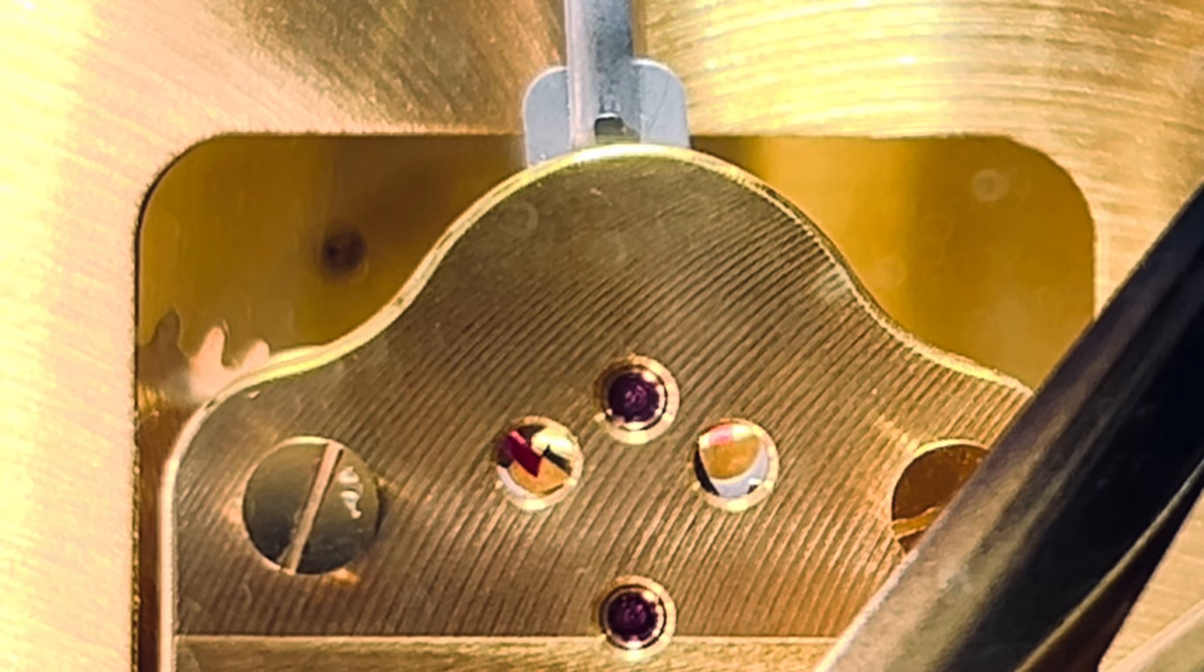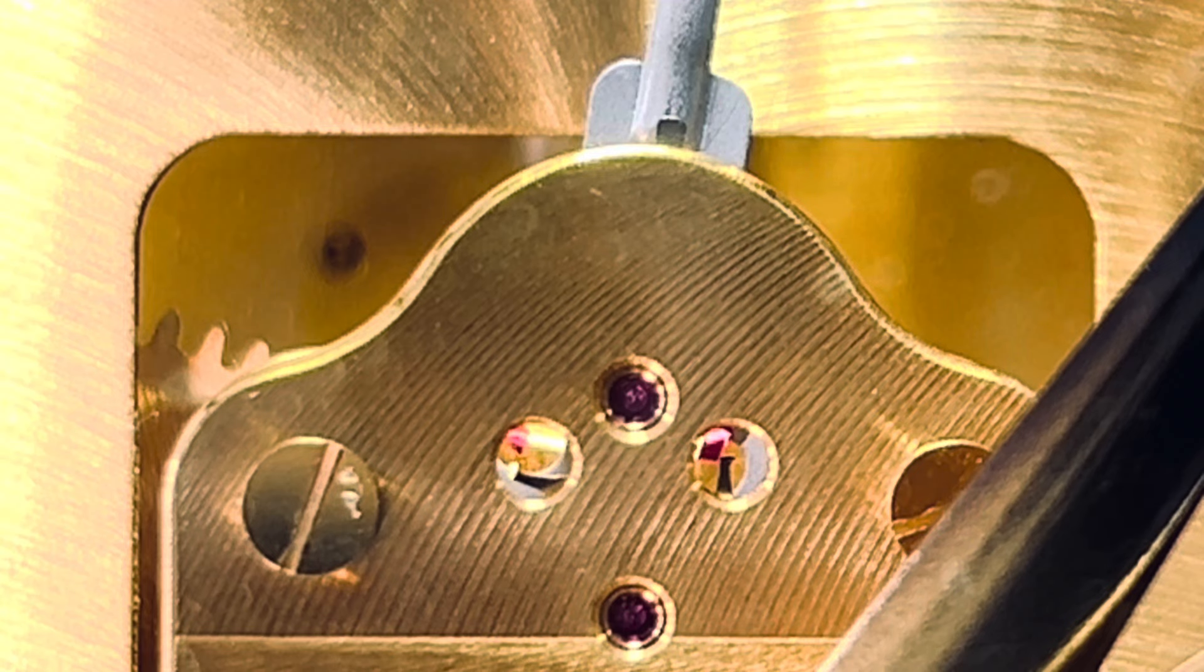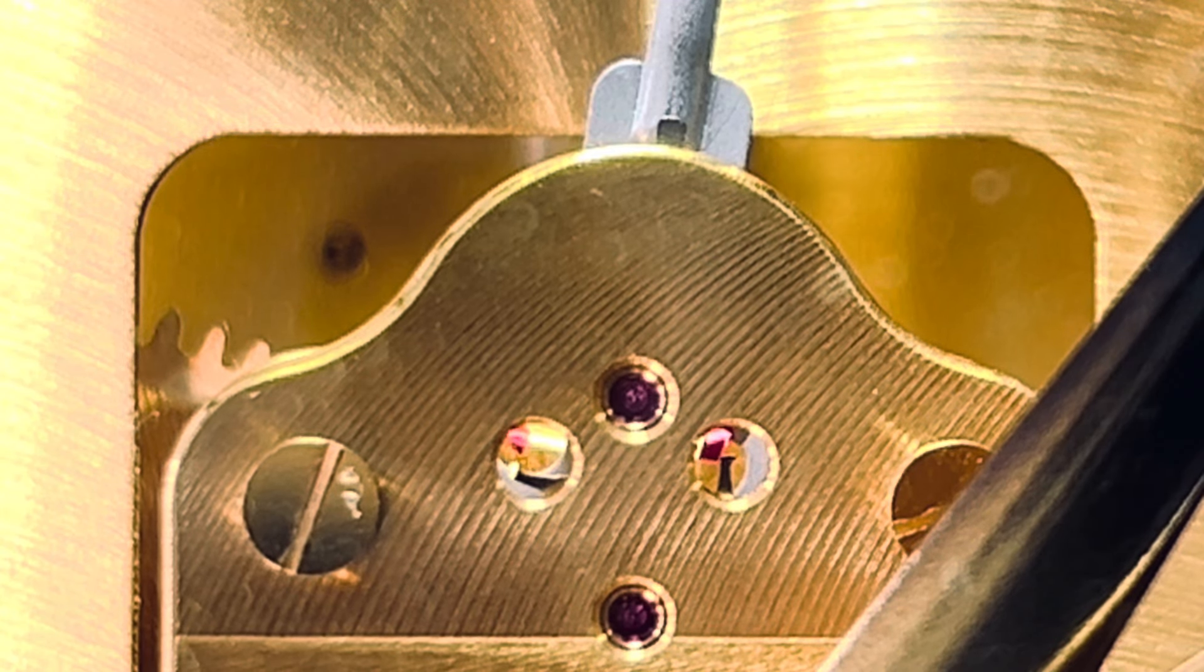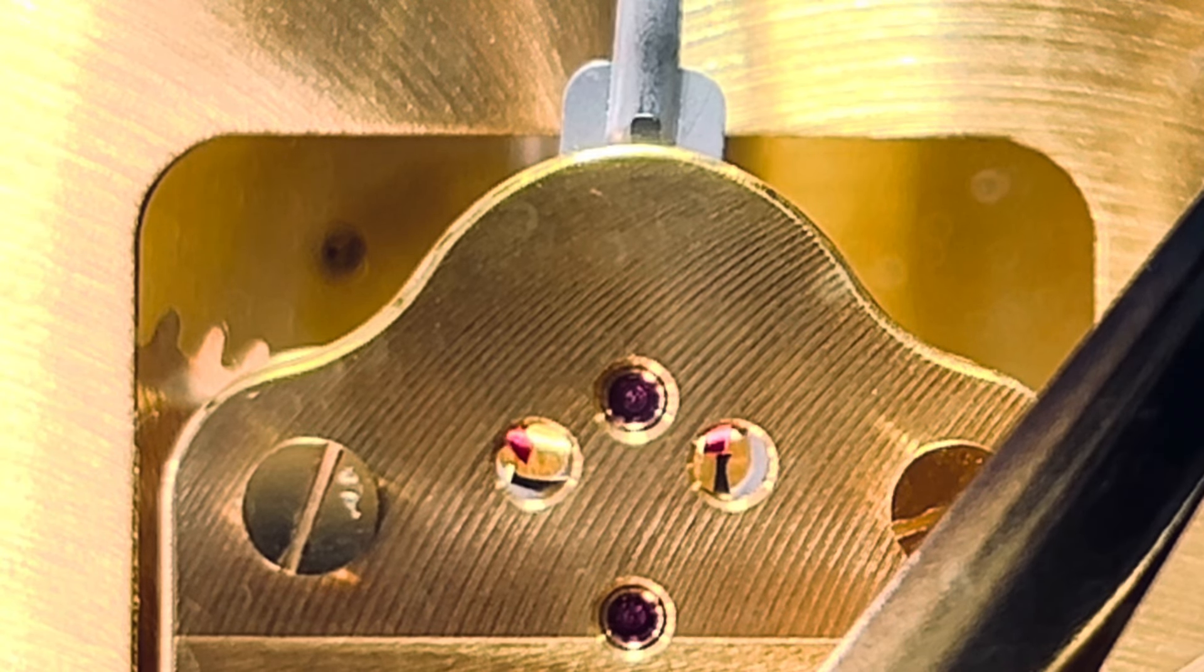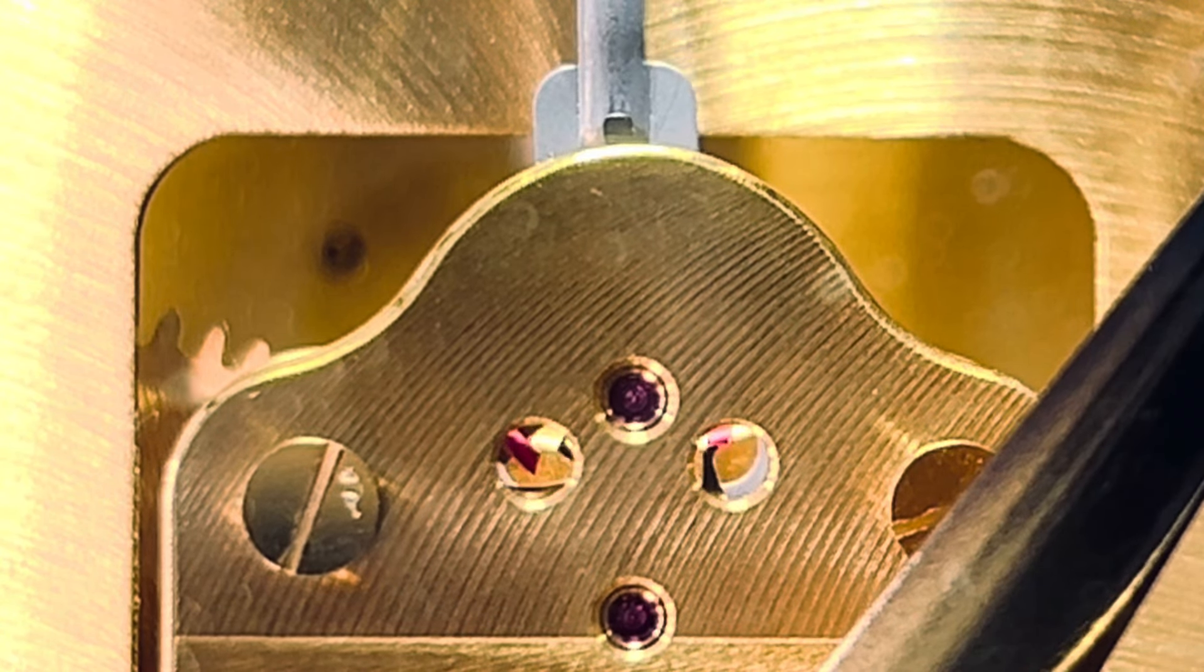For this dance to happen between the escapement, the pallet fork, and the impulse roller, one of the most important steps is the fork has to be properly poised. If the fork isn't properly poised, it's off balance. It will not shift to the left or to the right. It will become heavy on one side, and that will actually prevent the fork from moving.